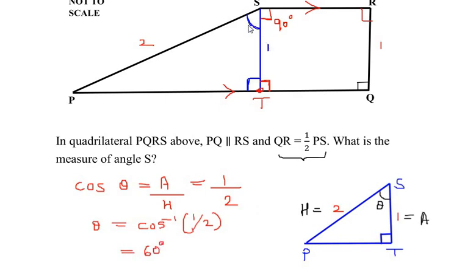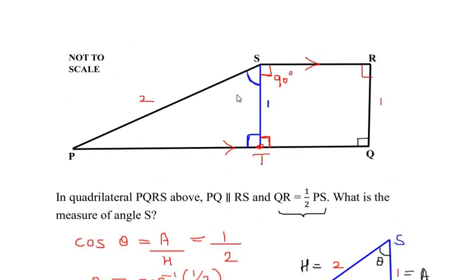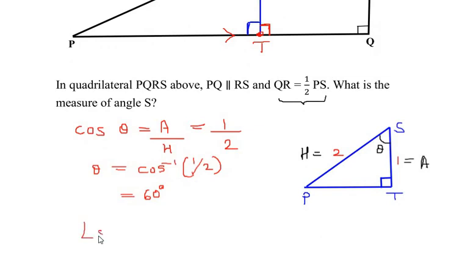So we got the value of this part, and it is 60 degrees. Now the total angle S is going to be equal to 60 degrees plus 90 degrees, and that is going to be equal to 150 degrees.